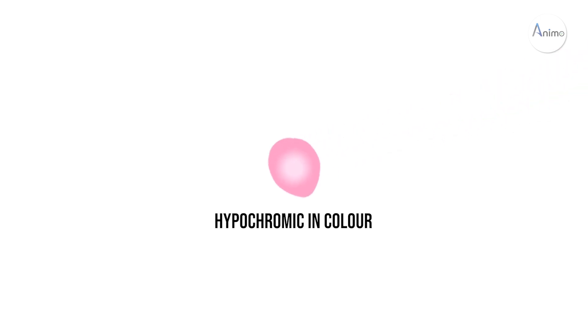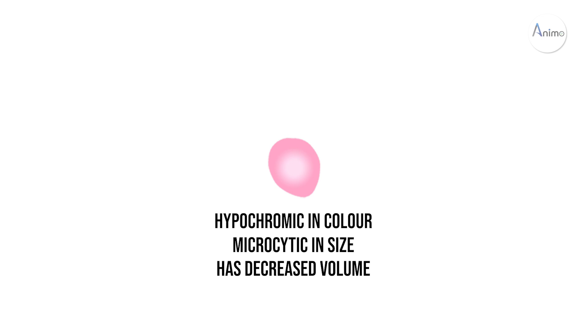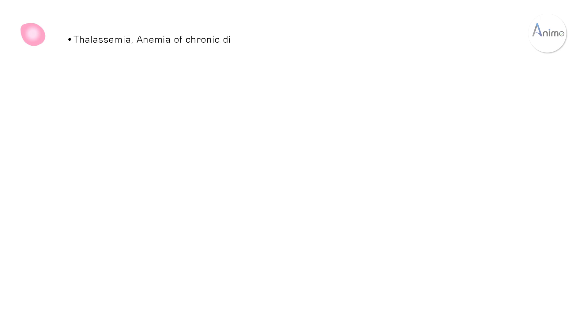This is a small RBC, hypochromic in color and microcytic in size. It has a decreased volume, so this is called hypochromic microcytic RBC. It is found in thalassemia, anemia of chronic disease, iron deficiency anemia, and lead poisoning. You can remember these diseases by the mnemonic TAIL.